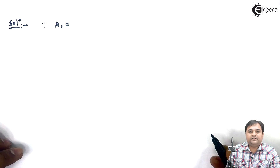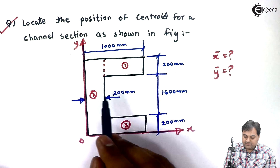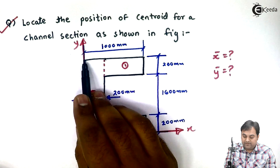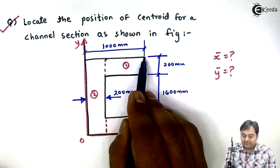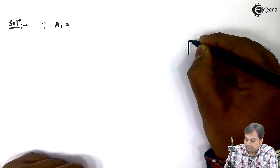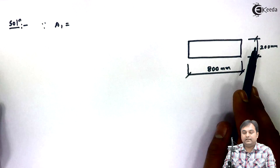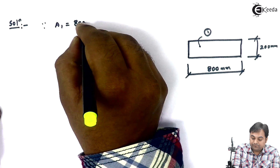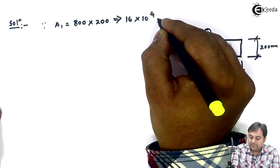Area 1 indicates the area of the first rectangle. The first rectangle has a width of 800 mm — since the total width is 1000 mm and the web width is 200 mm, giving 1000 minus 200 equals 800 mm — and a height of 200 mm. So Area 1 equals 800 multiplied by 200, which comes out to be 16 × 10⁴ mm².